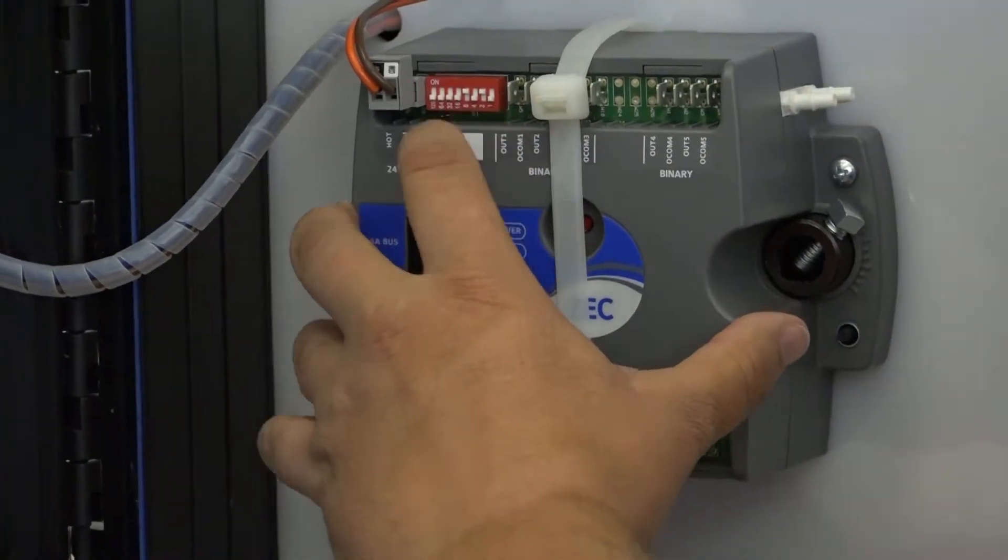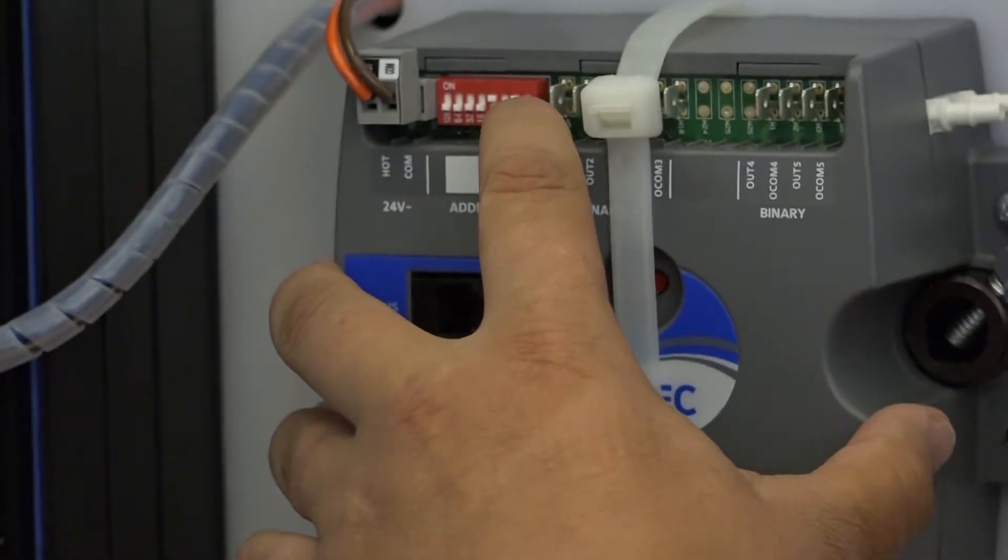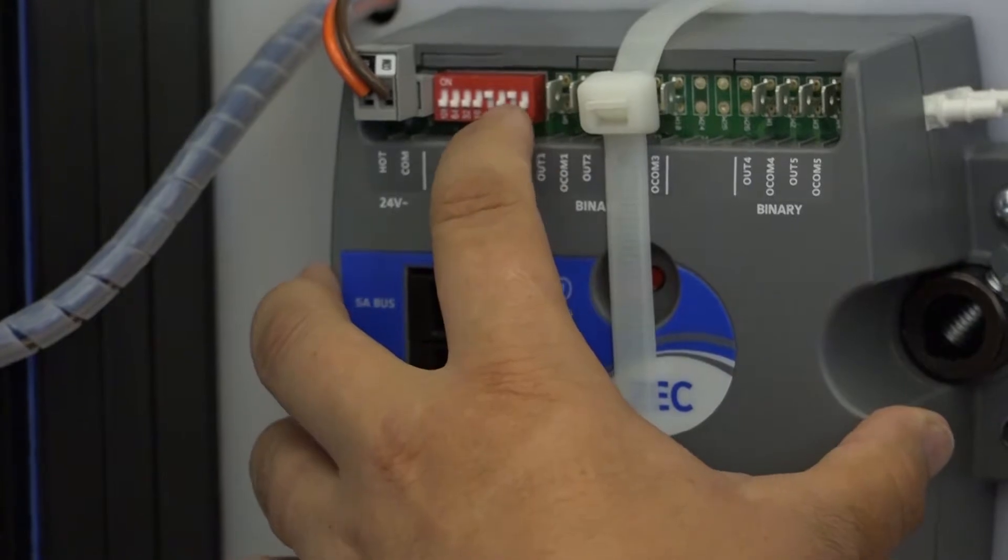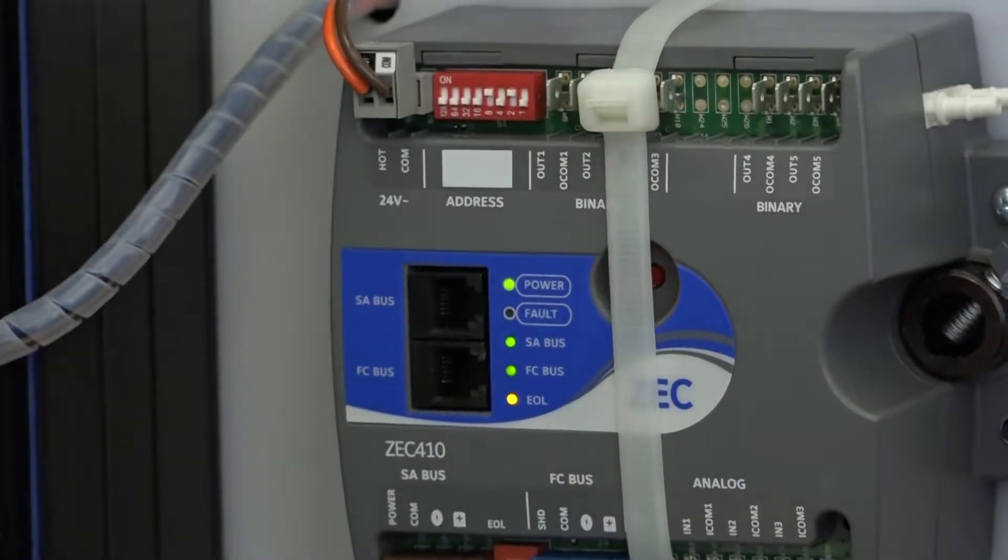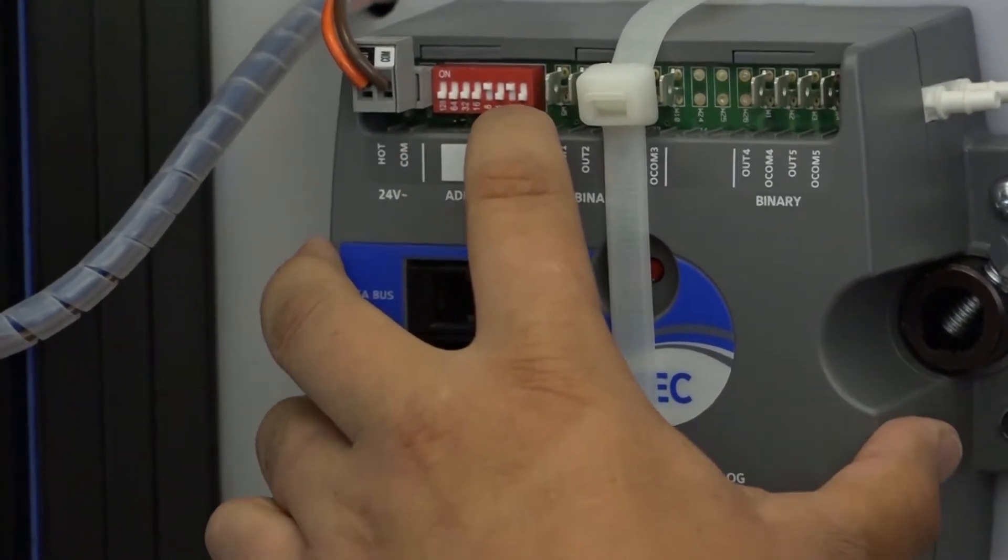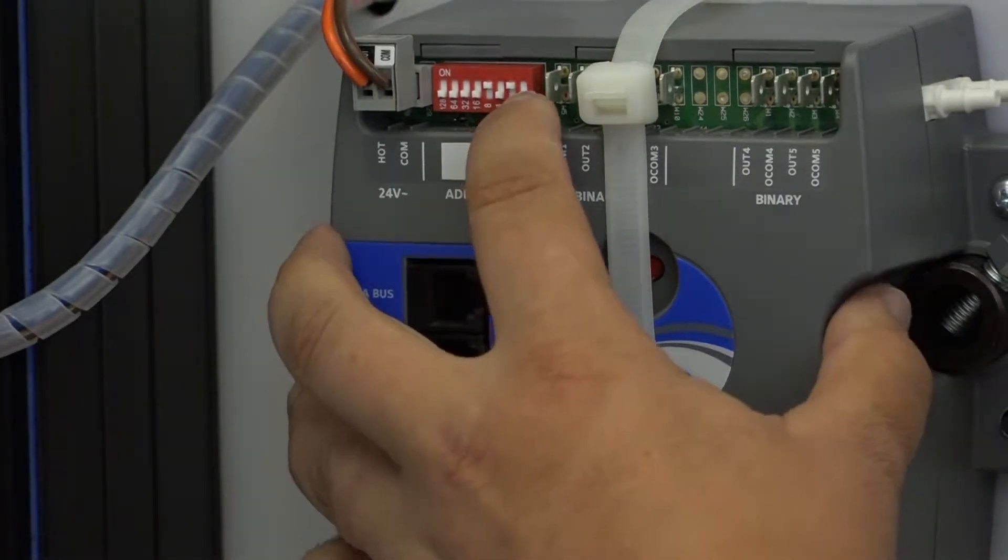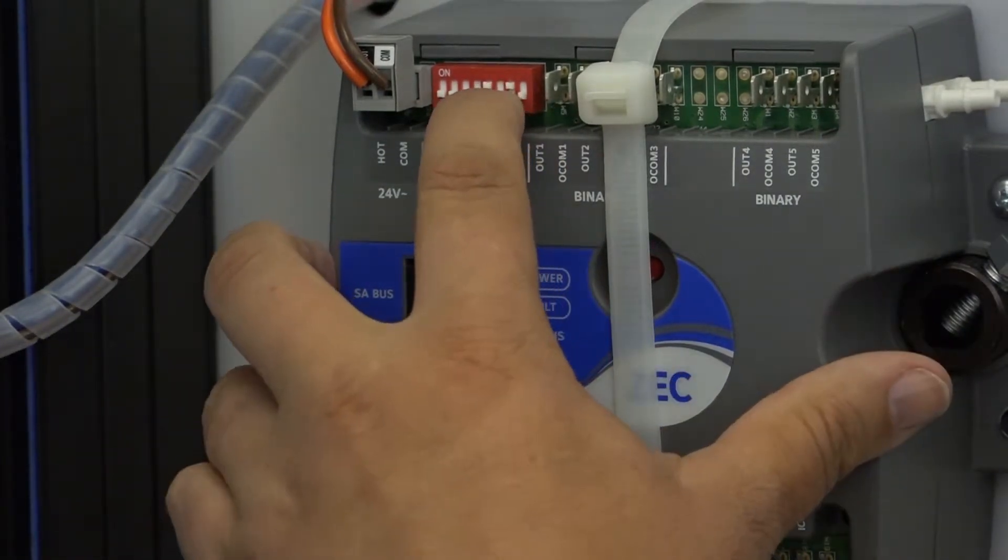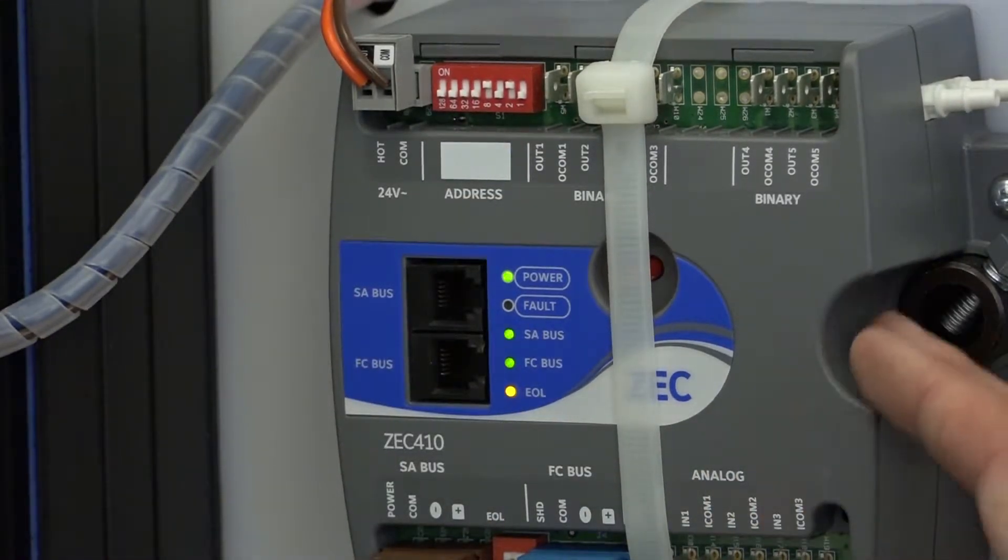The address switch is a binary switch. So you'll see a 1, a 2, a 4, an 8, a 16, and so on. To set the address, you turn on the switches to add up to the address you want. So in this case I have switch number 2 and switch number 8 are on. That means that the address of this controller is 10.